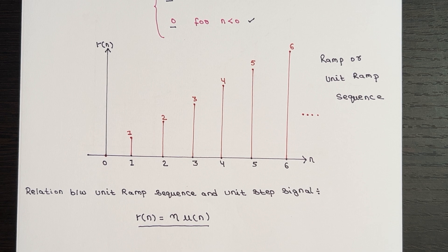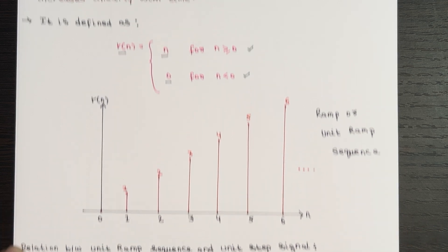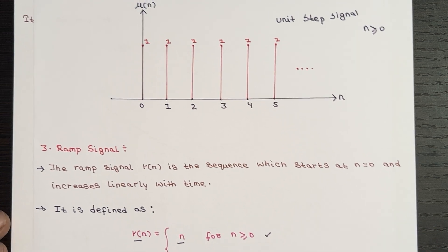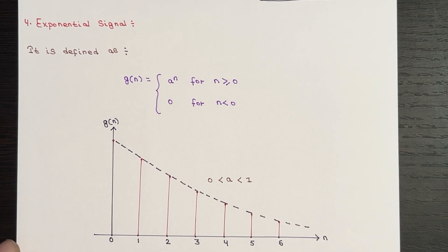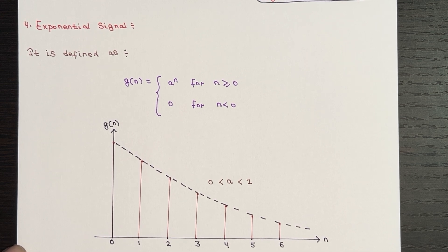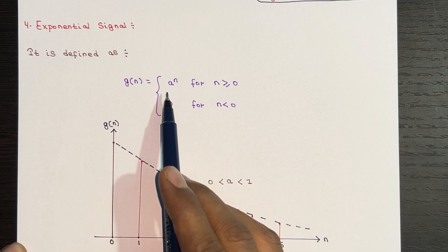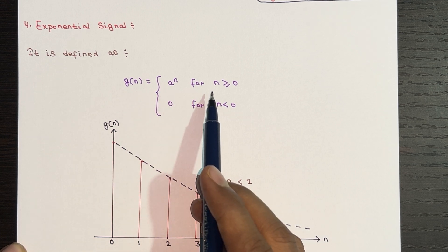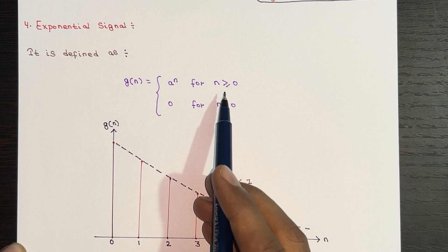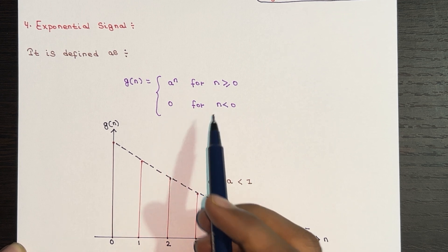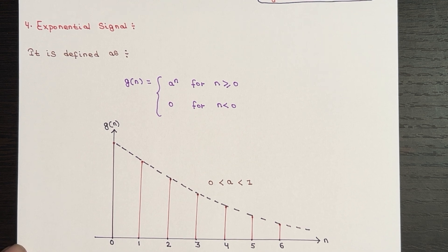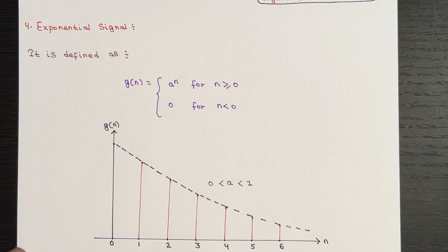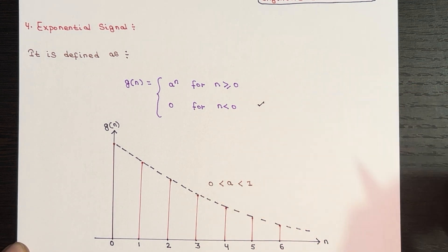Now let's dive into the exponential signal. An exponential signal is defined as g(n) equals a to the power n for n greater than or equal to zero, and zero for n less than zero. This is the functional representation of an exponential signal.